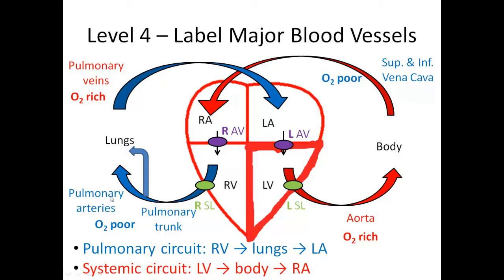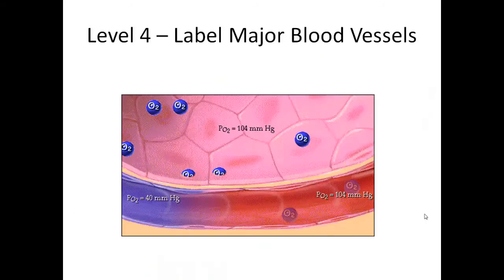The reason there are two pulmonary arteries — actually four, two to each side — is because there's a branch to the right lung and a branch to the left lung. Down here you have your pulmonary and systemic circuits. Using this diagram, you should be able to answer many exam questions dealing with blood flow.